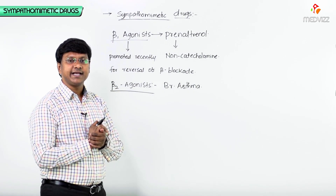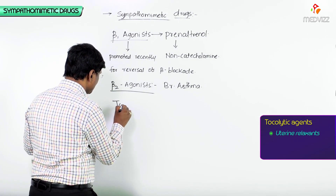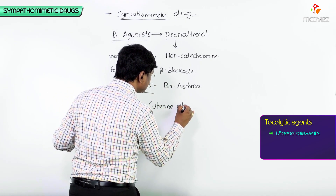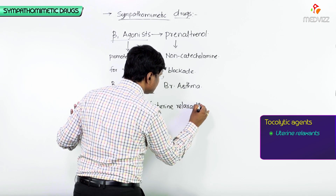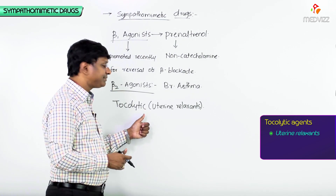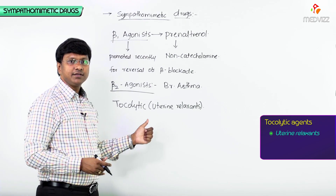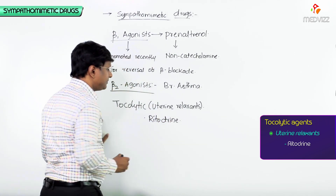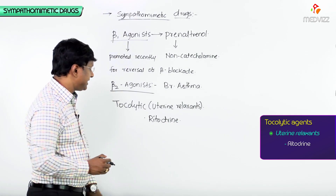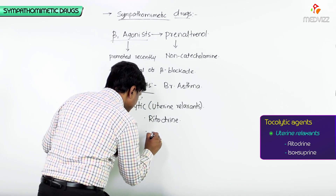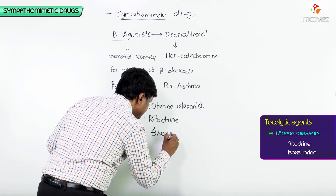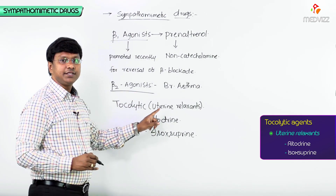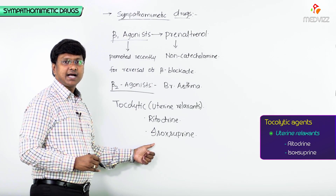We have two more beta2 agonists which are useful as tocolytic agents — that is, they are uterine relaxants. The examples of beta2 agonists having tocolytic action are ritodrine and isoxuprine. These two are your tocolytic agents, which are uterine relaxants.